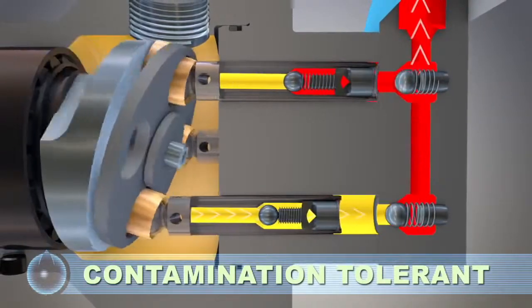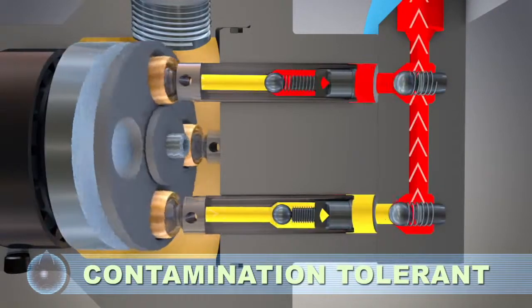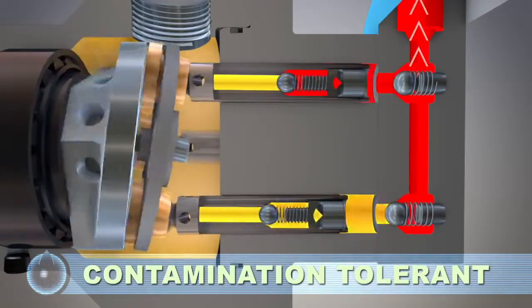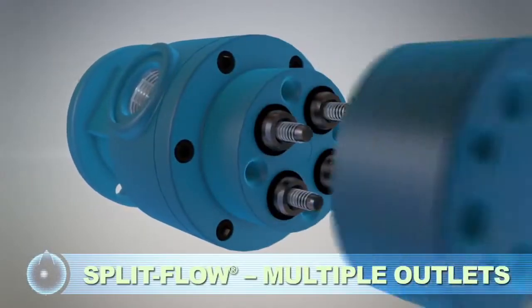The check balls reseat during each cycle for even wear. The large flow path allows contamination to be flushed through the pump. Our split flow technology pumps simplify multiple function circuits.